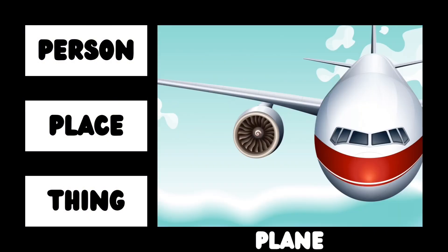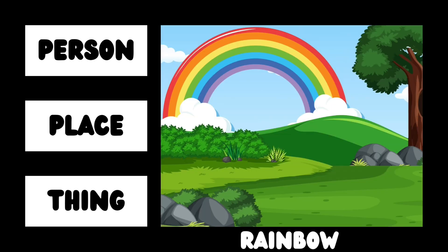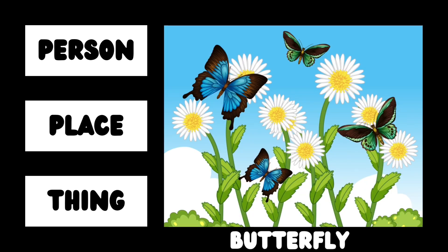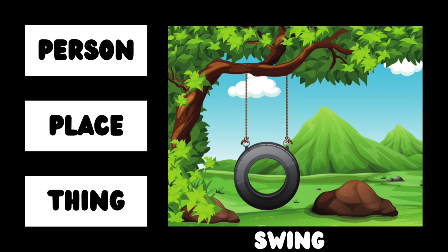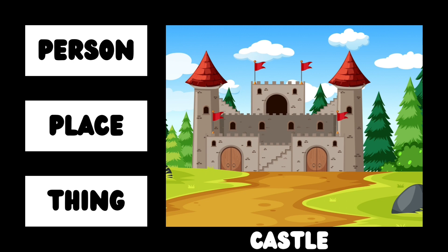Surfer. Plane. Rainbow. Bear. Butterfly. Fly. Fear. Swing. Castle — it's a castle.